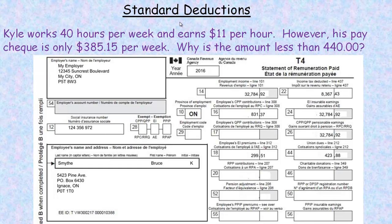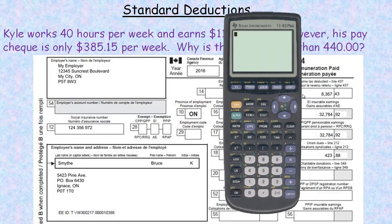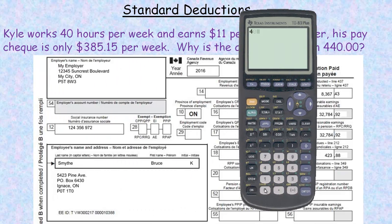This tutorial is on standard payroll deductions. In the example above, Kyle works 40 hours per week and earns $11 an hour. However, his paycheck is only $385.15 per week. Why is the amount less than $440? Where the $440 comes from is if we take 40 hours and multiply it by $11 for each of those — that would be his gross pay. But something's been deducted from that, because his paycheck is only $385.15.